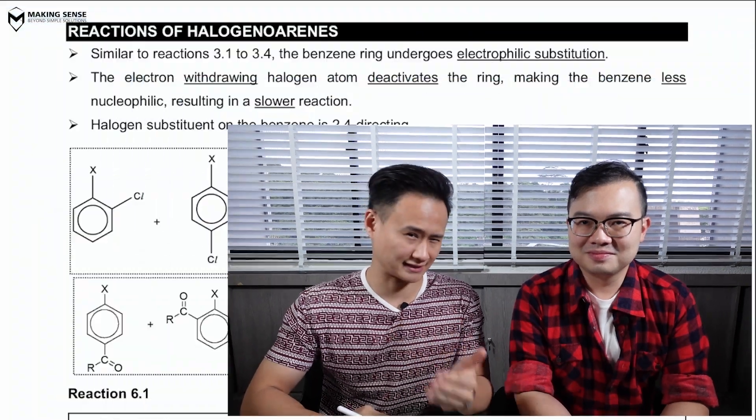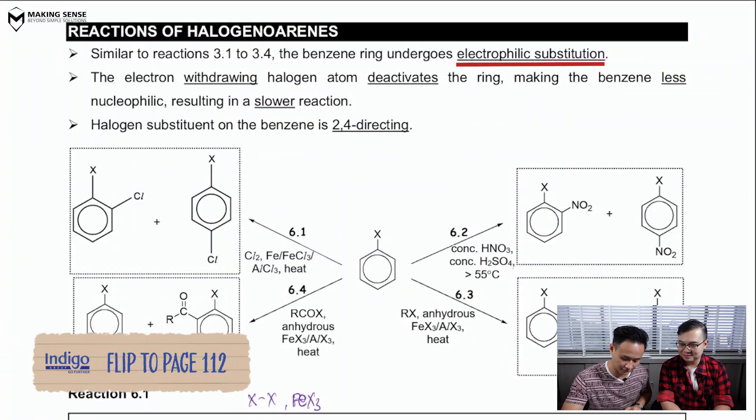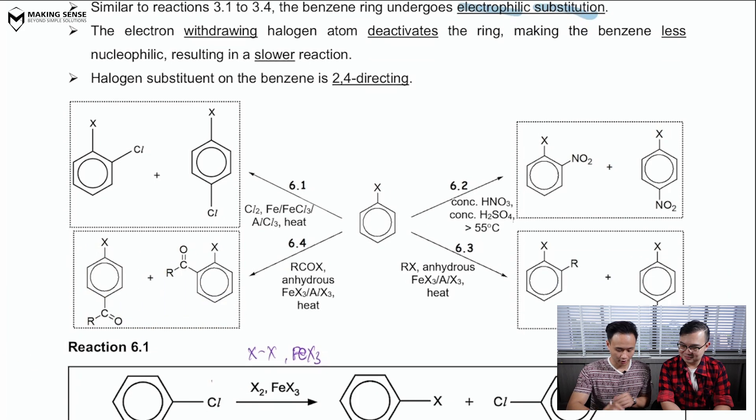Exactly. Now, so, for halogenyl arenes, because the benzene in the halogenyl arenes is nucleophilic, it has to react with the electrophiles, so it cannot undergo a nucleophilic substitution. It reacts via an electrophilic substitution reaction. And we've seen this in arenes. So, now, we have four reactions here, 6.1 to 6.4.